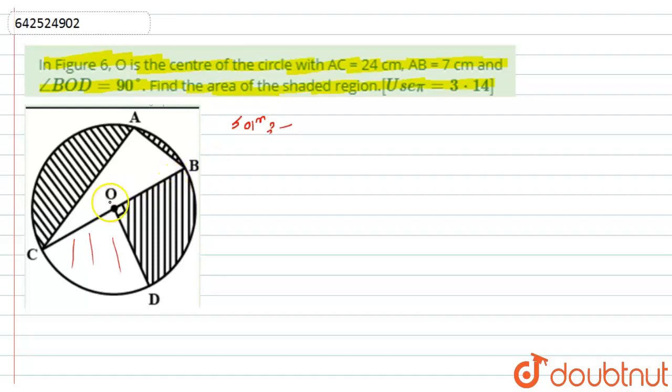So, if you look at the figure, BC is the diameter to the circle. Hence, this angle will become 90 degrees. So, here I can say that angle CAB is equal to 90 degrees. If angle CAB is 90 degrees, hence the triangle ABC is a right angle triangle.